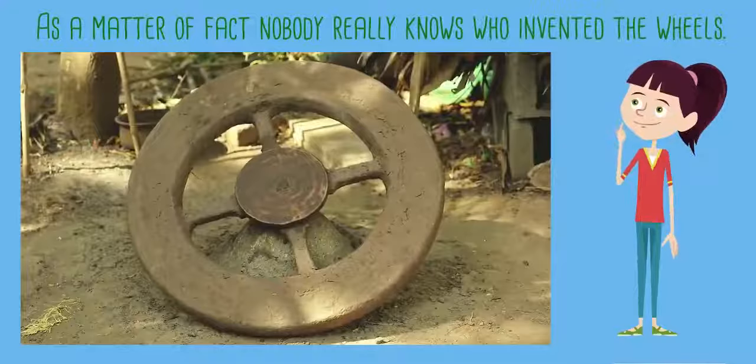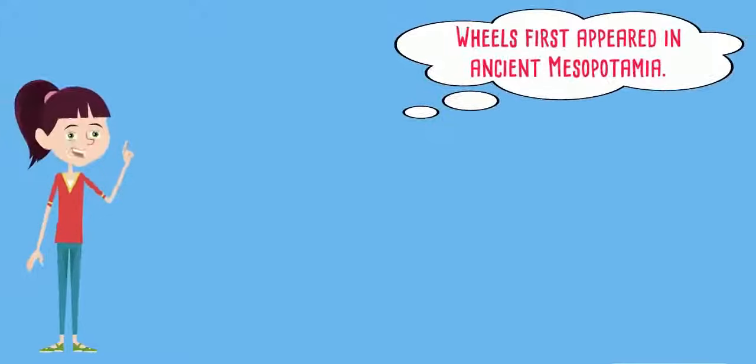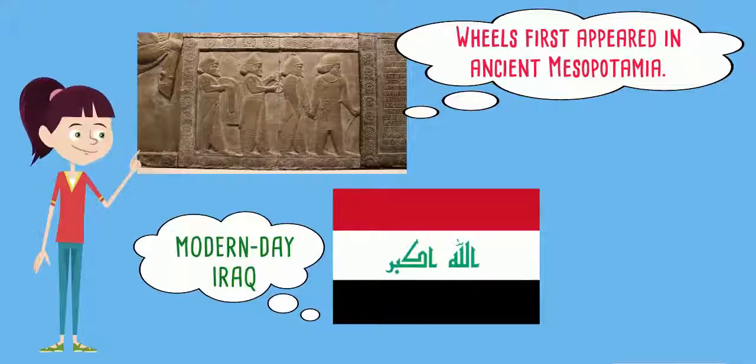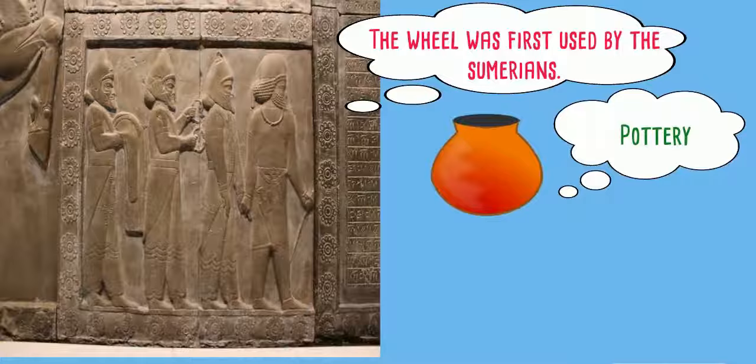Wheels first appeared in ancient Mesopotamia, modern-day Iraq, more than 5000 years ago. The wheel was first used by the Sumerians for pottery and later for transportation.